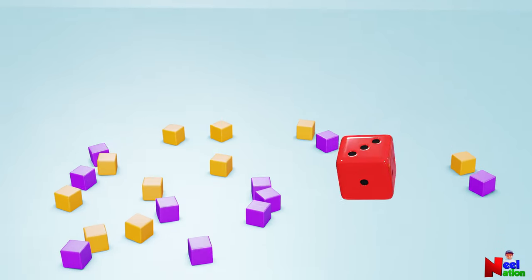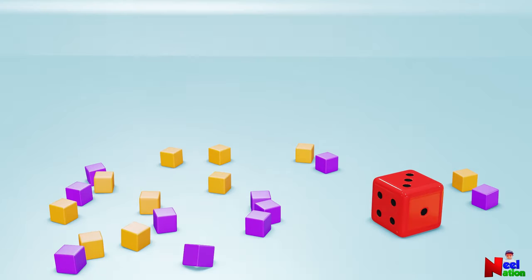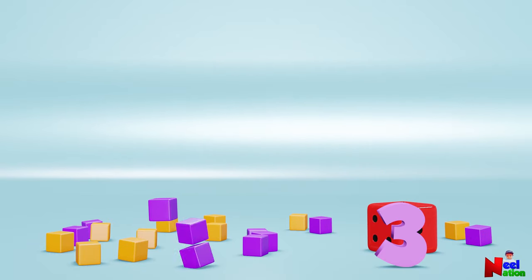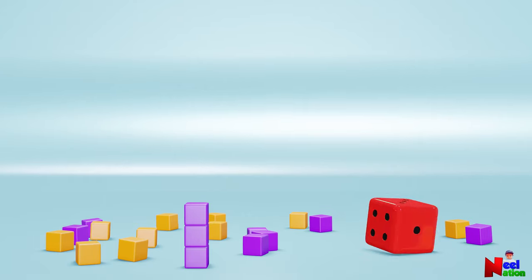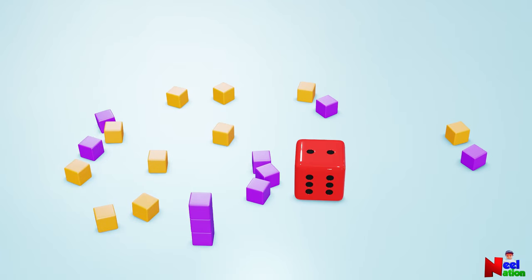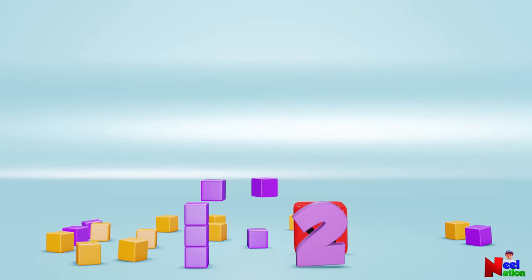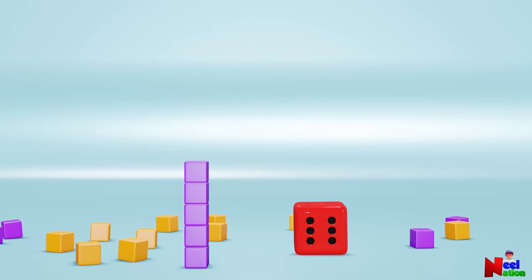Dice shows the number three. Okay. Now, let's stack three purple cubes one on top of the other. Let's roll the dice. Dice shows the number two. Now, let's stack two more cubes on top of the tower. You have a purple tower that is five cubes tall.